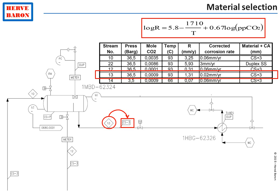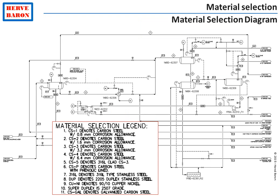If the overall wall thickness loss is more than 6 mm, a corrosion resistance alloy such as stainless steel must be selected. This calculation is done for each and every line of the facility, and the material is selected accordingly. The results are shown on the material selection diagram, which uses the PFD as background and indicates for each line the selected material of construction.